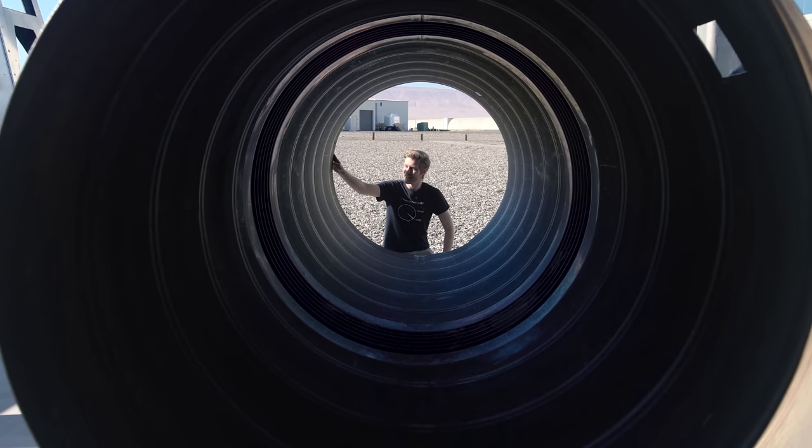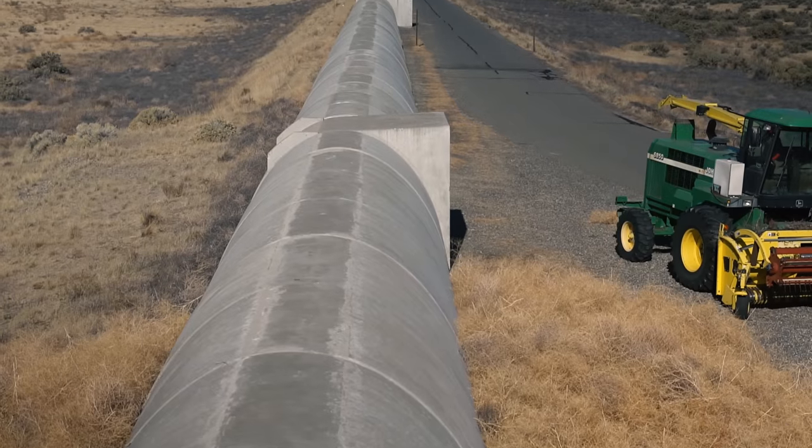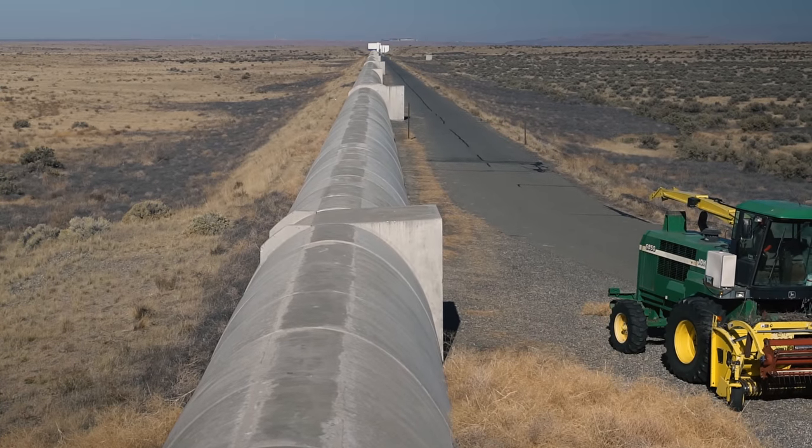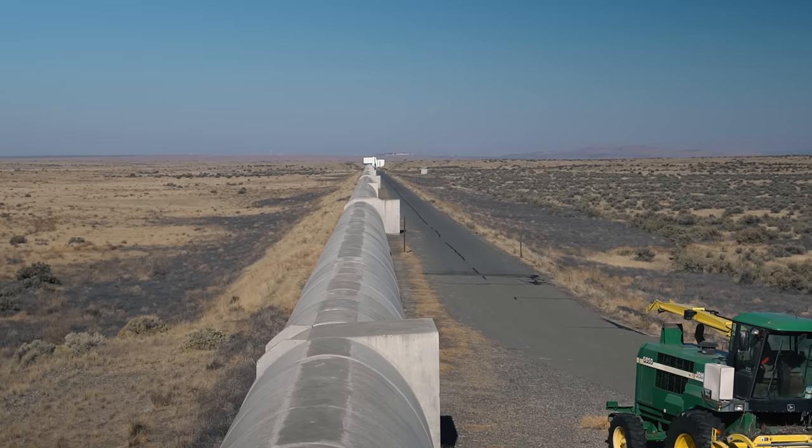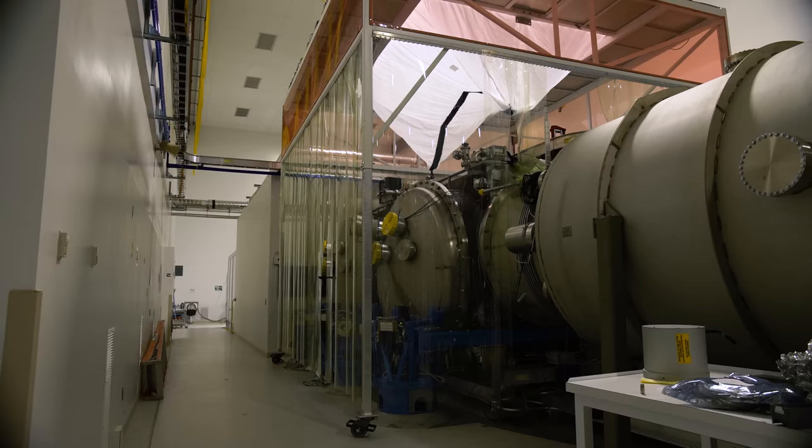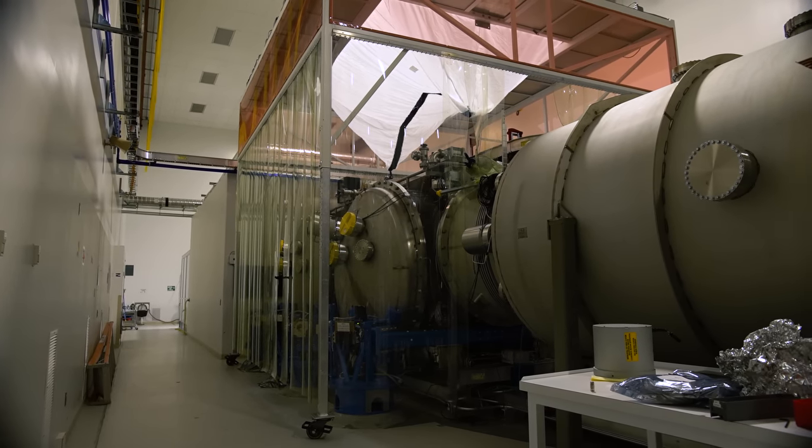The real magic, though, happens in this 3 millimeter thick stainless steel tube, which is held to one trillionth of an atmosphere. Even the vacuum outside the International Space Station can't hold a candle to what they've got going on in here. So, how did they build it? Well, first, they cooked. Or, more accurately, baked.